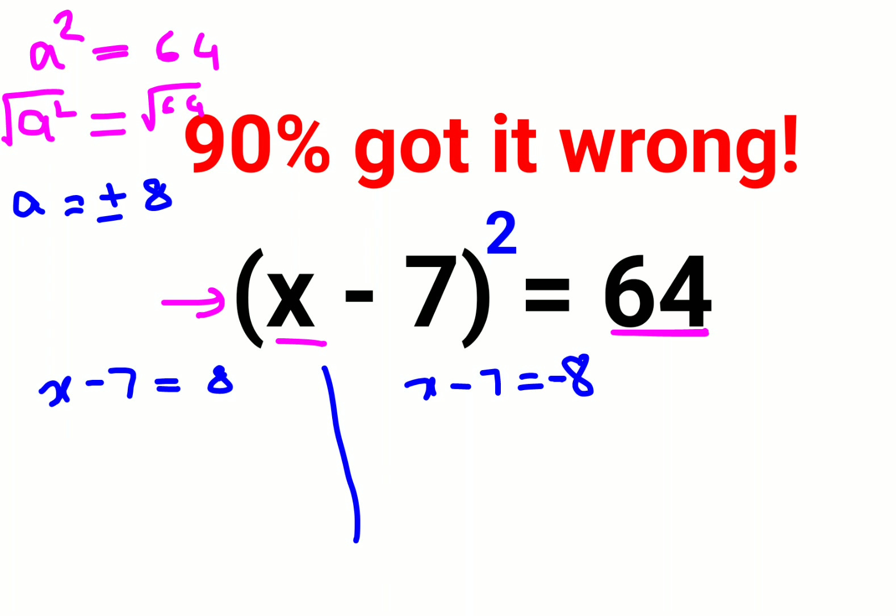So now adding 7 on both sides, x - 7 + 7 gets you x + 0, that is basically x = 15. And the other way round you get x = -8 + 7.